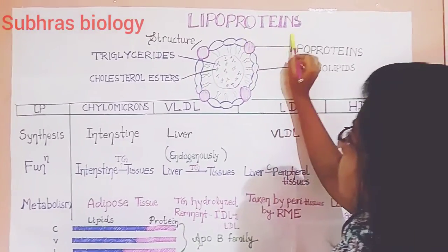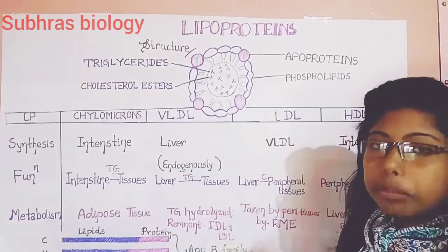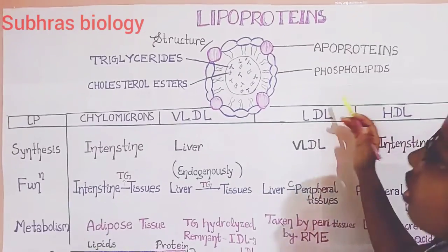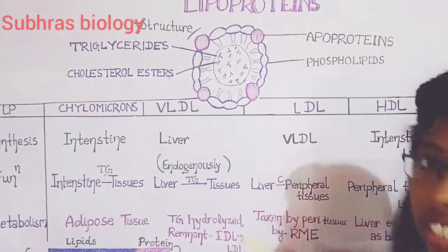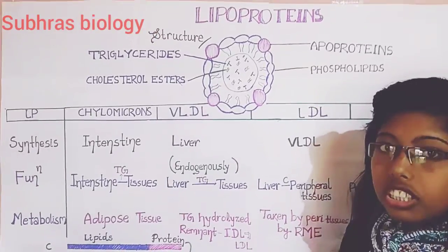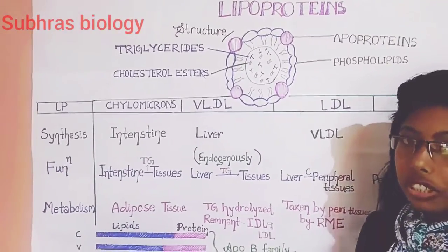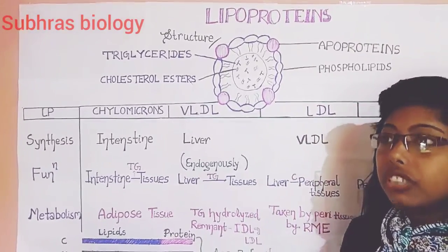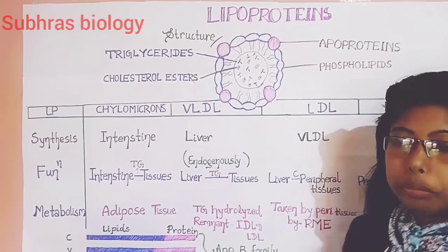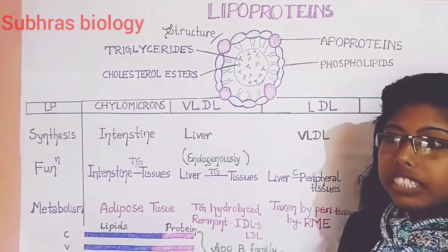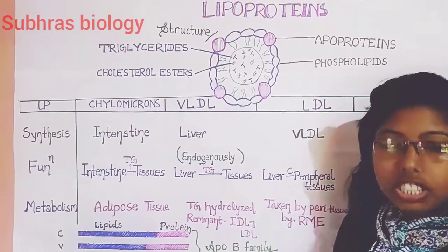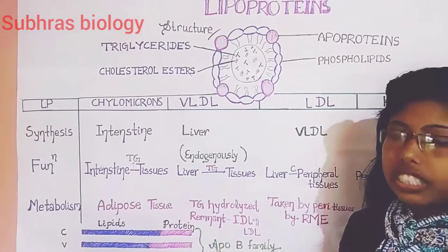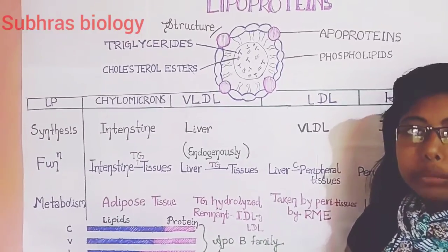As we know, the name 'lipoproteins' suggests the lipids which contain the proteins. So what are these lipoproteins? These lipoproteins are the carriers of triacylglycerols and cholesterol. Why are they attached with the proteins? Because lipids are insoluble in water and they are hydrophobic in nature. So as they are insoluble in water, they should be transported to the brain, cardiac tissues, peripheral tissues, etc. So they are attached with some proteins by which they can be transported easily.